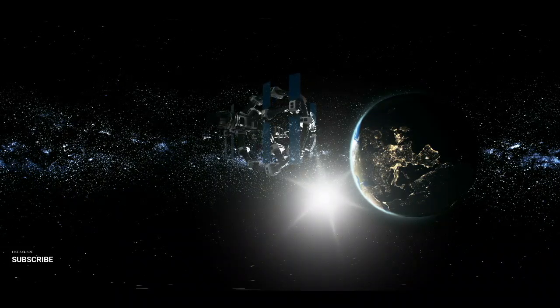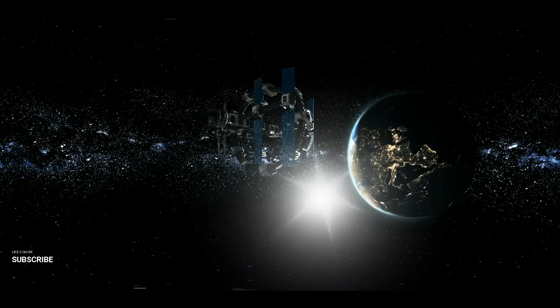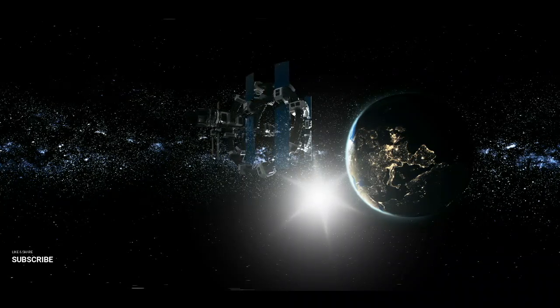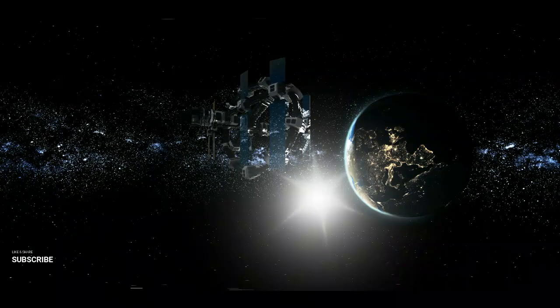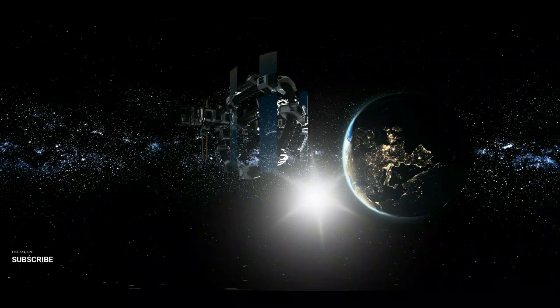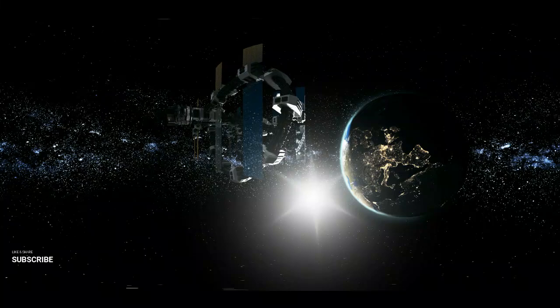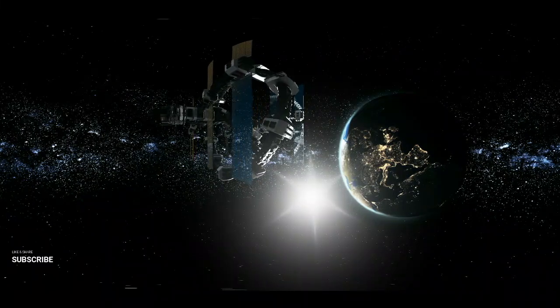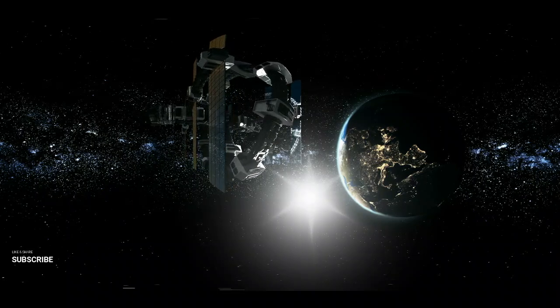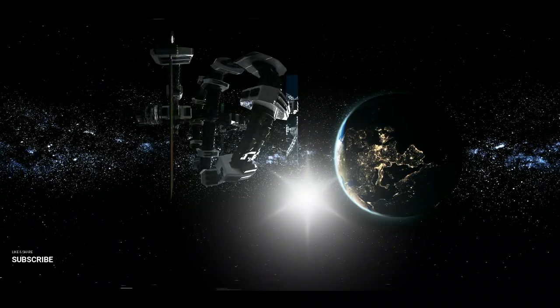One of the most exciting discoveries about Europa is the evidence suggesting a subsurface ocean beneath its icy crust. Scientists first suspected this after observing Europa's surface, which is riddled with cracks and ridges. These features look strikingly similar to ice on Earth that covers liquid water. Further analysis of Europa's magnetic field confirmed that something beneath the surface was likely conducting electricity, and the best explanation was a salty liquid ocean. Europa's ocean could be up to 60 miles deep, containing more water than all of Earth's oceans combined. If life exists anywhere else in our solar system, Europa is a prime candidate.